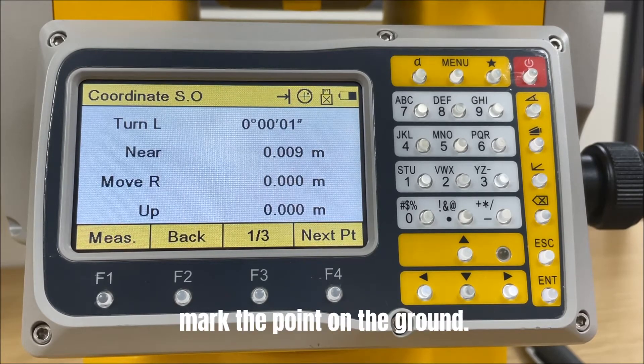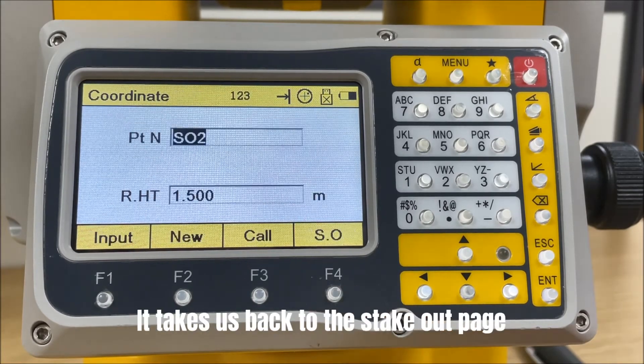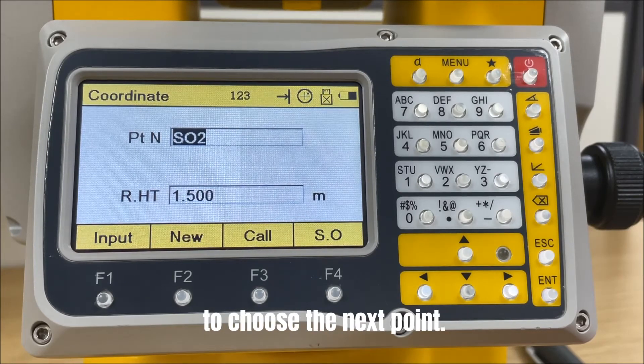When it is good enough to stake out, mark the point on the ground. It takes you back to the stake out page to choose the next point.